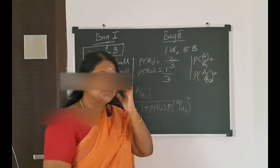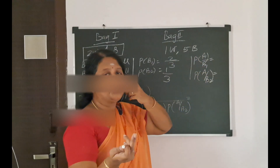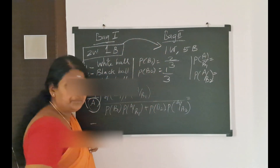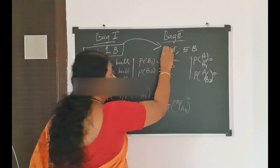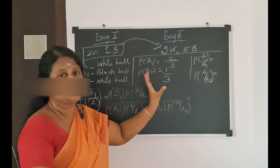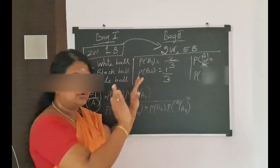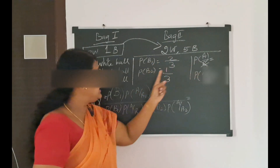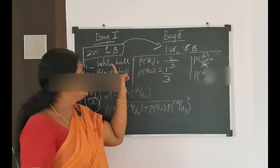Now we have conditional probabilities. B1 means a white ball is transferred to Bag 2. If you put a white ball into Bag 2, you will have 2 white and 5 black balls, giving a total of 7 balls. So P(A|B1) — the probability of drawing a white ball from Bag 2 given B1 — is 2 by 7.